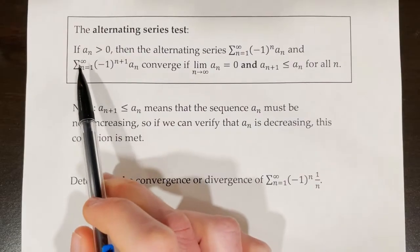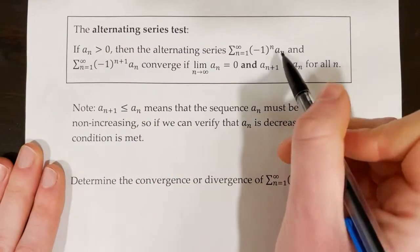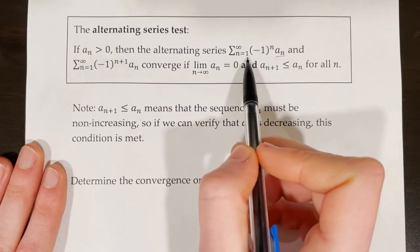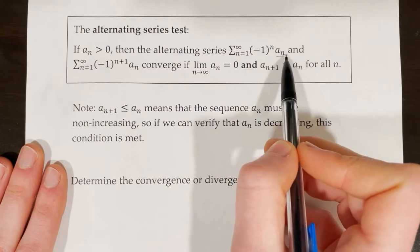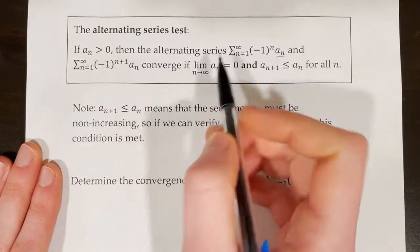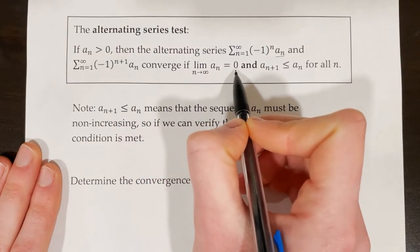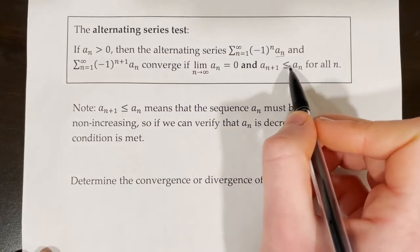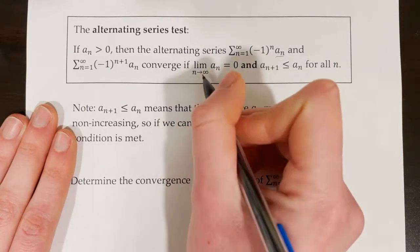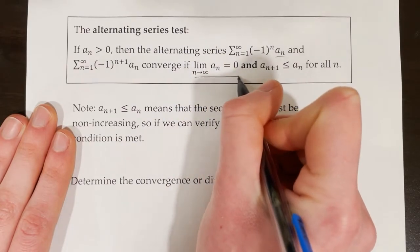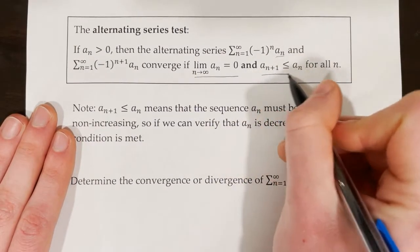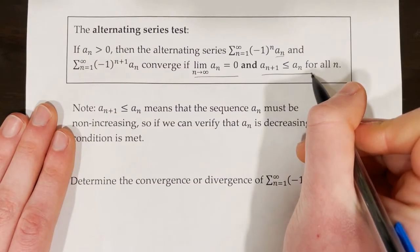The alternating series test states that if a sub n is greater than 0 — where a sub n is the non-alternating portion of the series — then the alternating series from n equals 1 to infinity of negative 1 to the power of n times a sub n, and the series with negative 1 to the power of n plus 1 times a sub n, converge if: first, the limit as n approaches infinity of a sub n equals 0; and second, a sub n plus 1 is less than or equal to a sub n for all n.